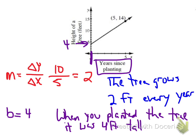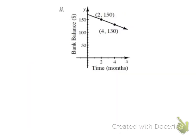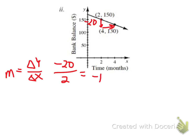Take a look at another example. On this one, our y-axis is bank balance in dollars, and our x-axis is time in months. So again, making a slope triangle, our change in y is going from 150 down to 130. That is a change of negative 20. Our change in x is going from 2 to 4, which is a positive 2. So our slope is negative 10.